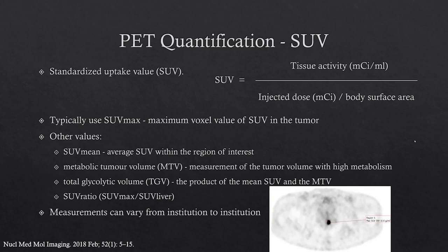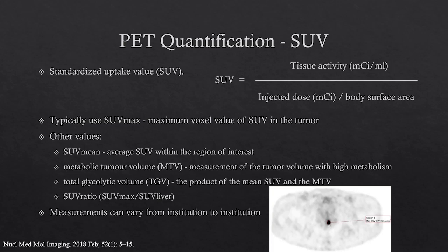With PET images, we typically do quantification for clinical PET reporting using the standardized uptake value, or SUV. There are several equations used to generate this value; some use lean body weight and other factors, depending on the institution and their protocol. Most centers use SUV max to report, which looks at the maximum voxel value in the tumor — for example, dropping a 3D region of interest gives an SUV of 10.6. Other values include SUV mean, metabolic tumor volume (MTV), total glycolytic volume, and various SUV ratios, though most places currently focus on SUV max.